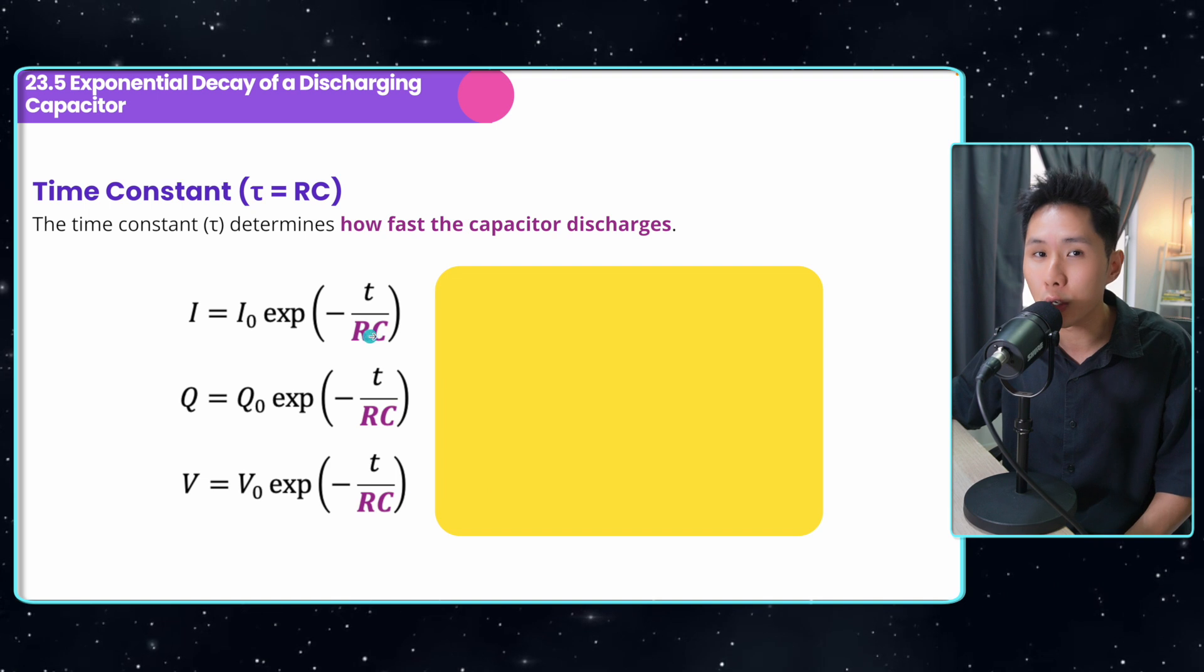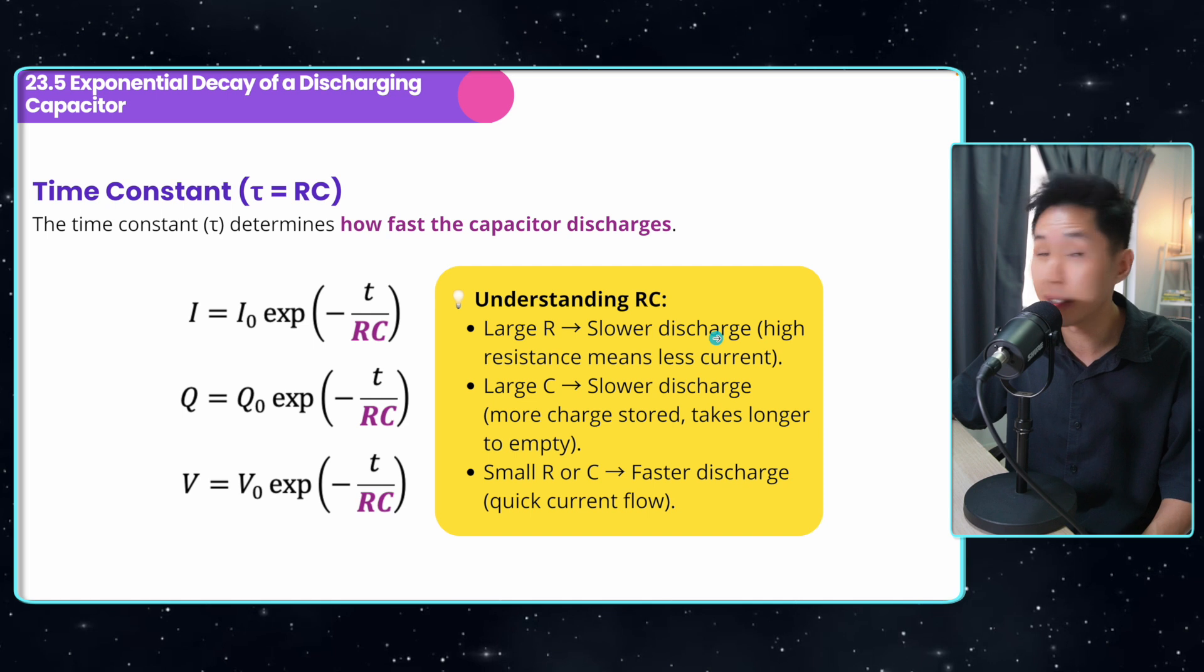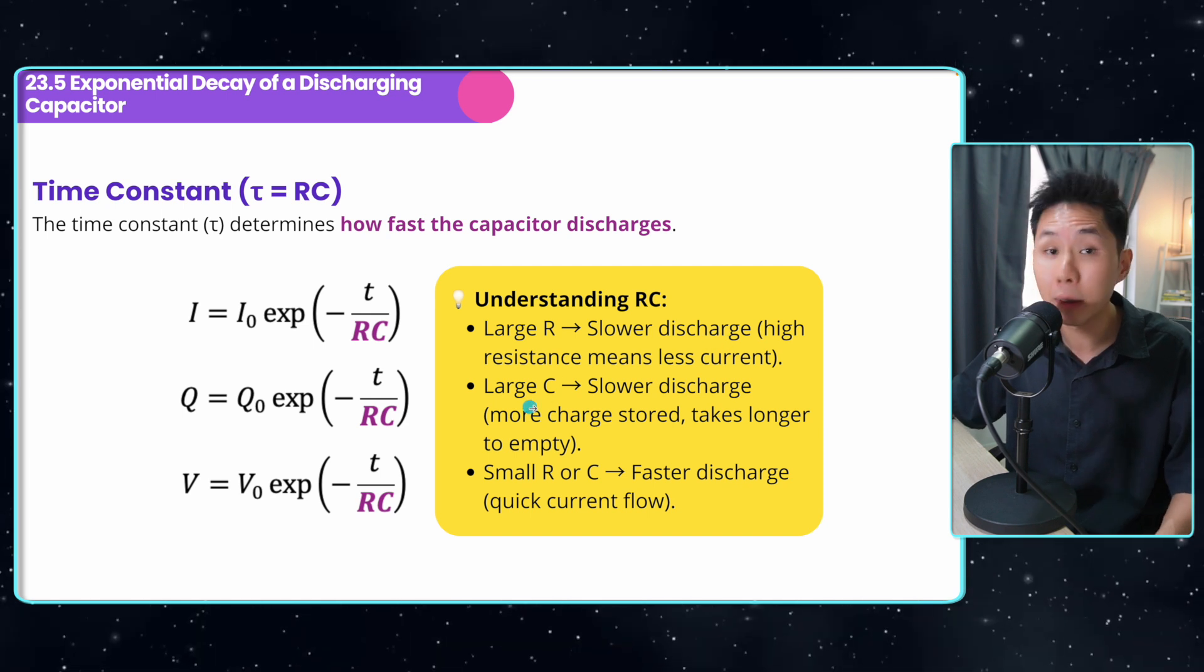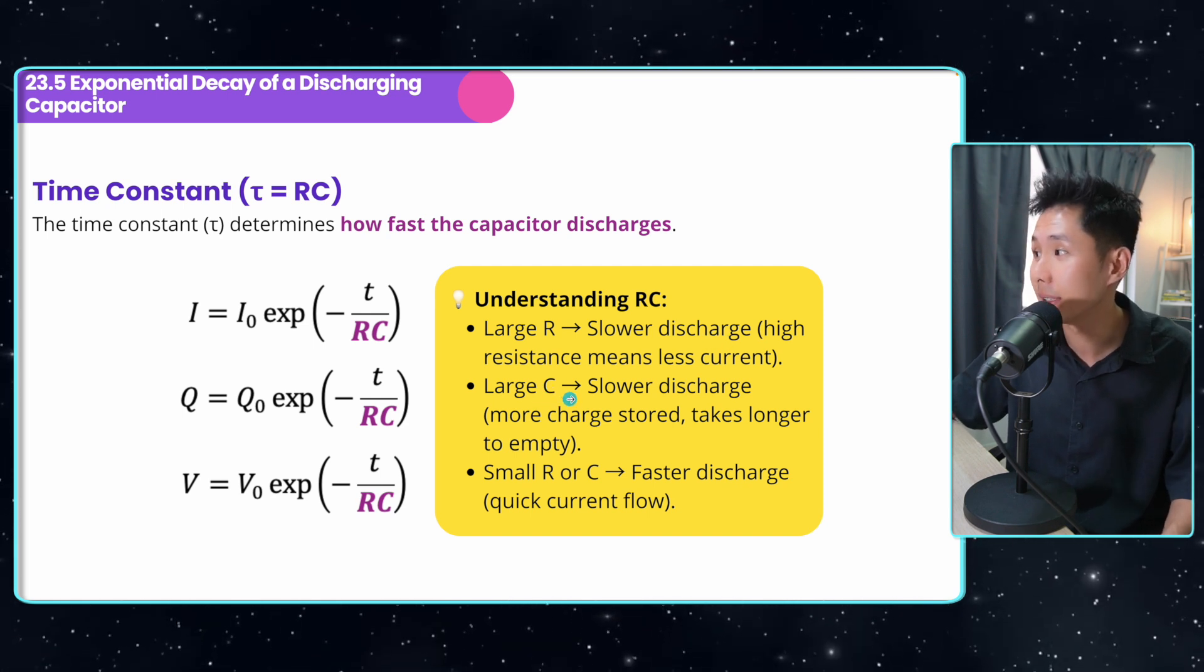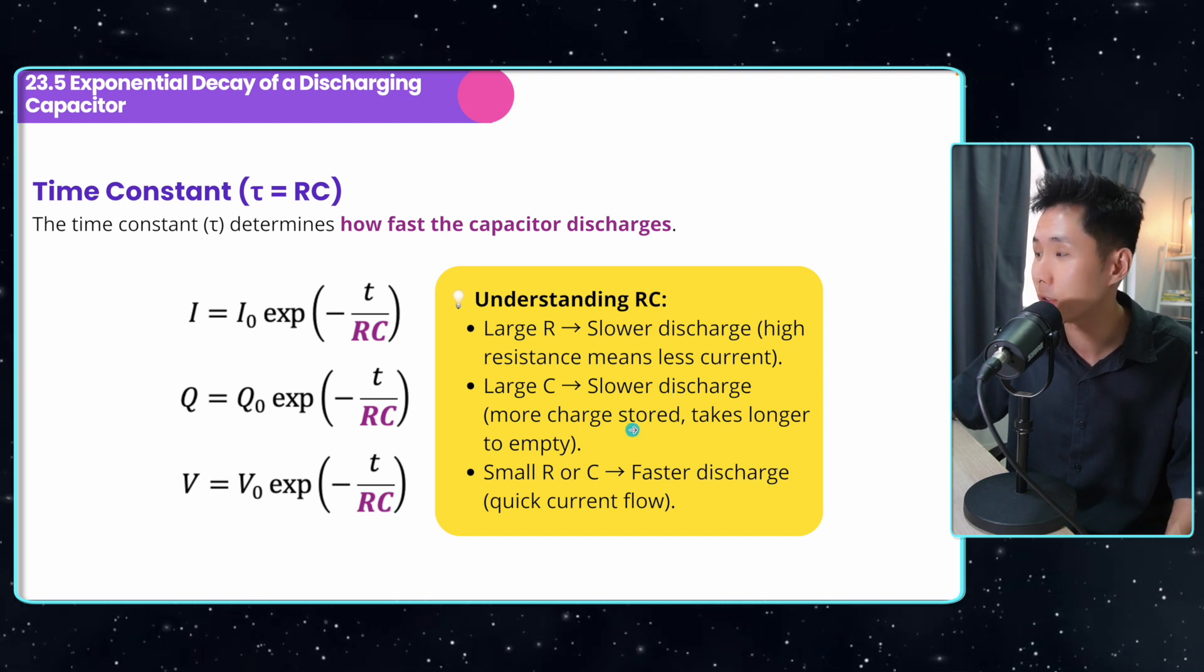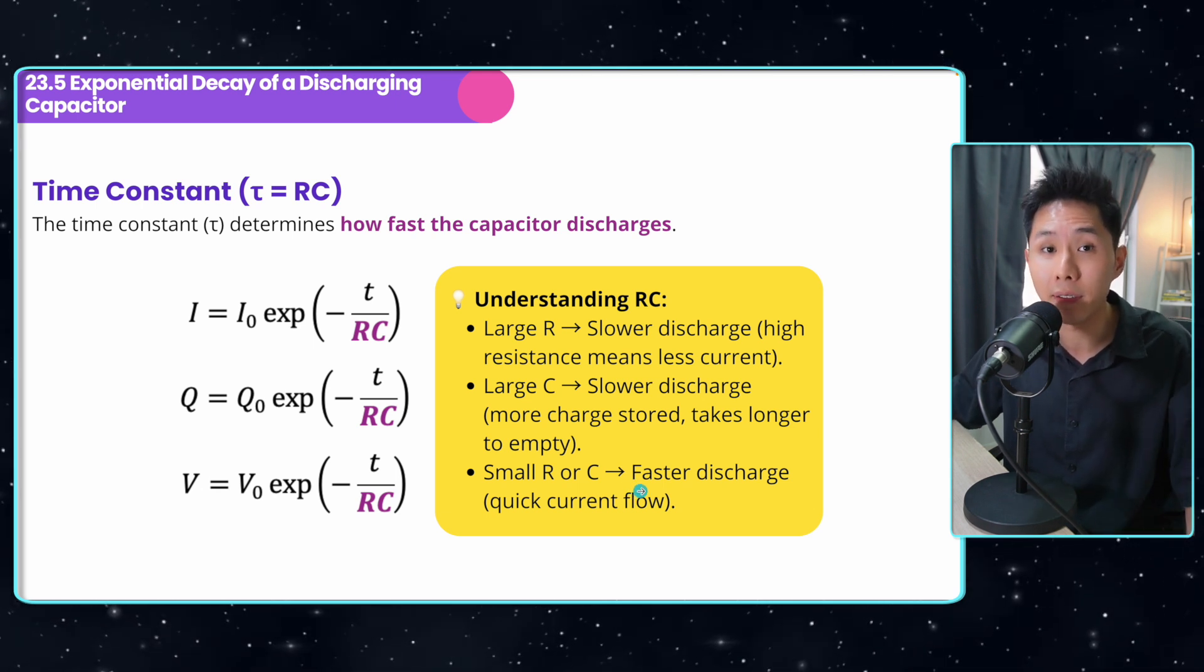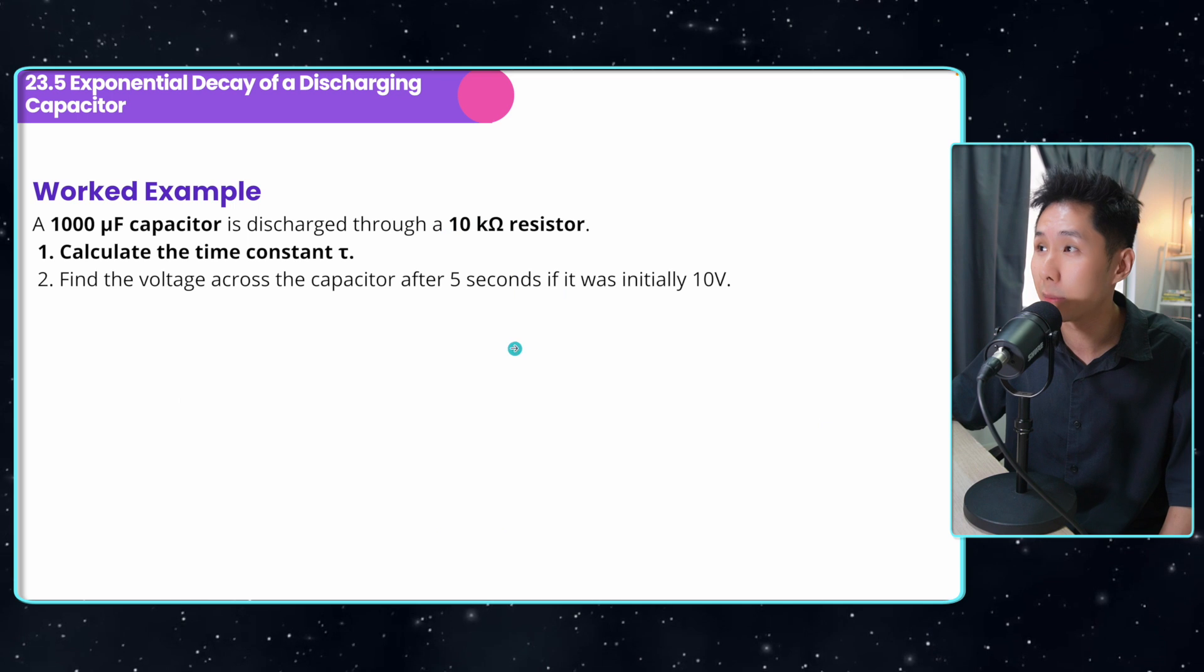What this equation shows us is that the larger the resistance, the slower the discharge, because current can flow slower, right? Similarly, the larger the capacitance, again, the slower the discharge. The reason is because there is more charge stored, and therefore it takes longer to empty. If RC is very small, it means that there is a faster discharge. Now let's try to solve some questions.